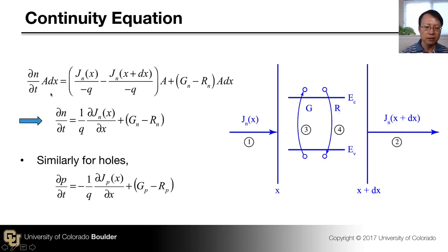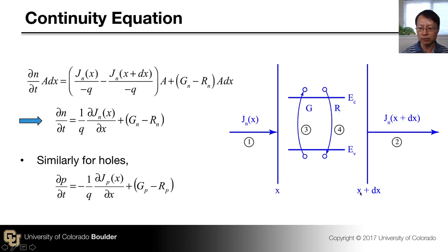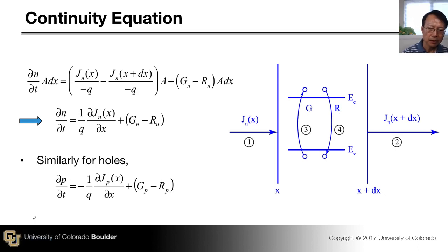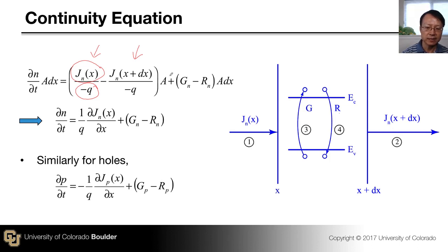The rate of change in the total number of electrons within that slice equals the rate of change in electron concentration times the volume, where A is the cross-sectional area and dx is the width. Electron flux equals current density divided by the electronic charge. The first term represents electrons flowing out, the second electrons flowing in, and there are generation and recombination rate terms times the volume.